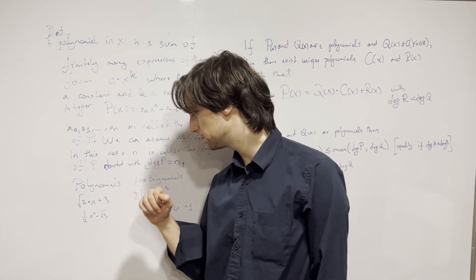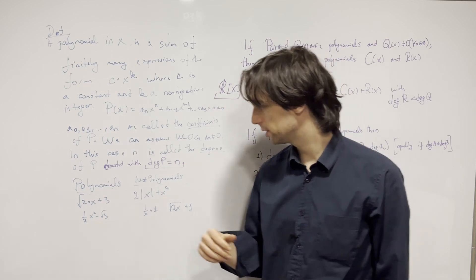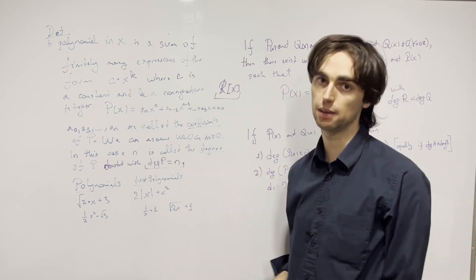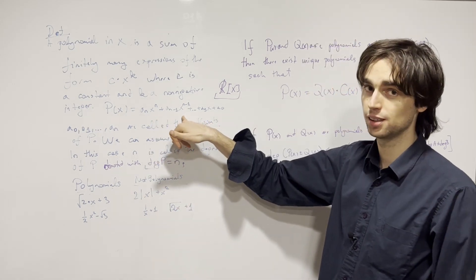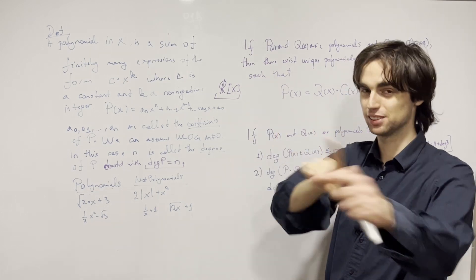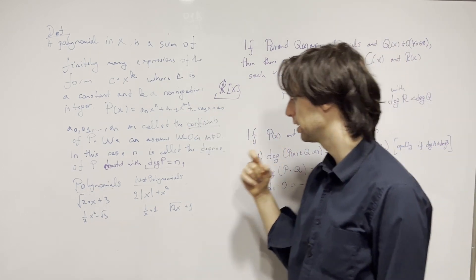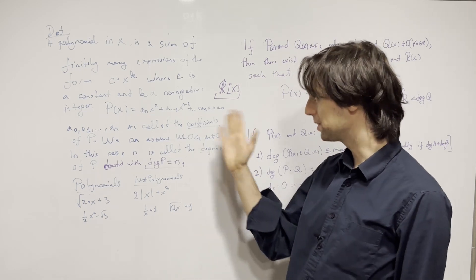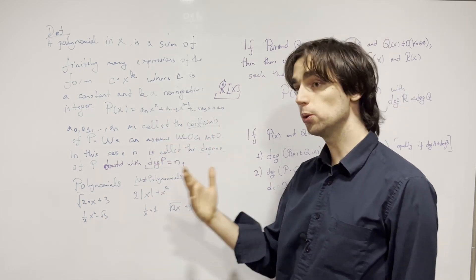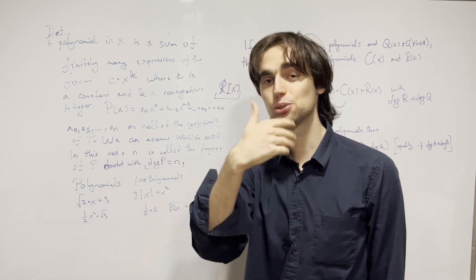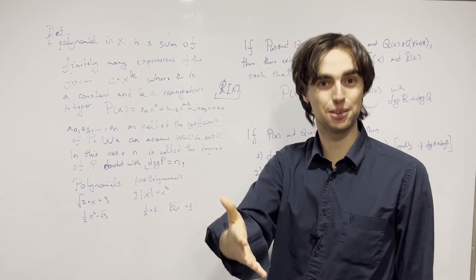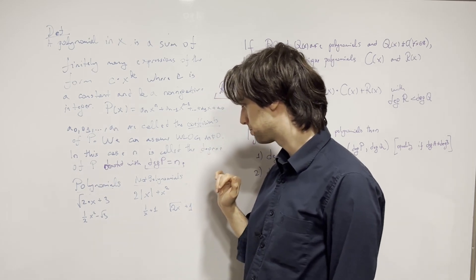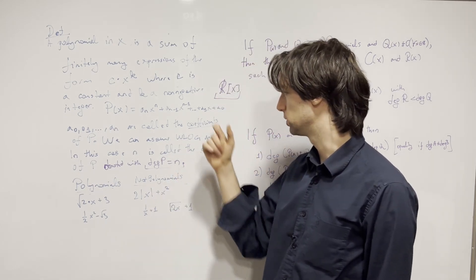Here are some examples: the expression √2 times x plus 3 is a polynomial; one-half x squared plus √3 is also a polynomial. What is not a polynomial: the absolute value of x, because you cannot write it in the required form — it's defined as a piecewise if-then. Similarly, √(2x) plus something is not a polynomial; √(x²) is not a polynomial because √(x²) equals the absolute value of x.